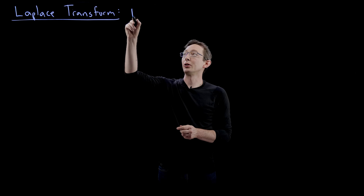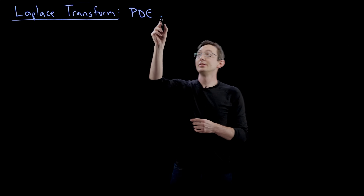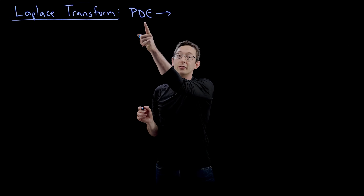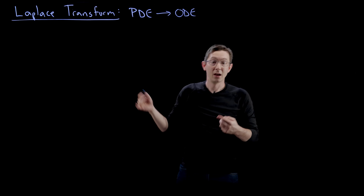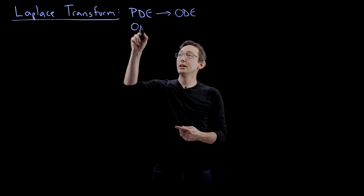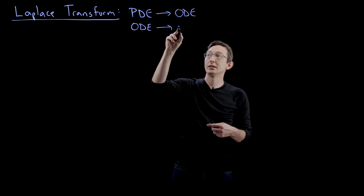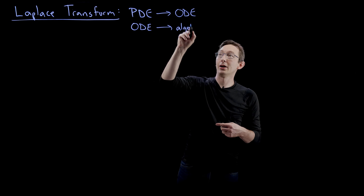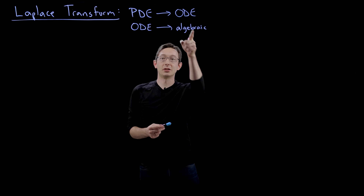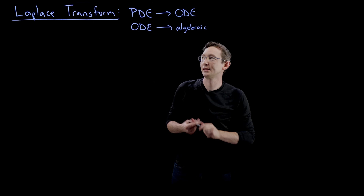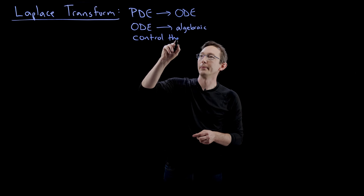For example, if you have a partial differential equation — a PDE — under certain circumstances you can Laplace transform it and turn it from a PDE into an ODE, which is much simpler. Similarly, you can take an ODE and under some conditions you can transform it with the Laplace transform into an algebraic equation, which goes from college to high school kind of solution techniques.